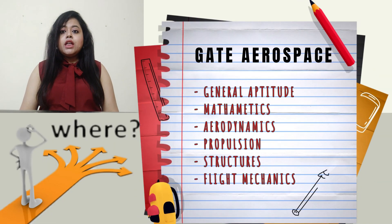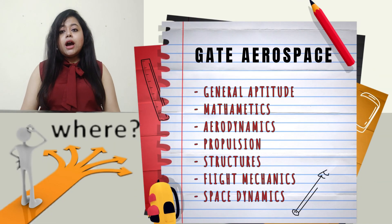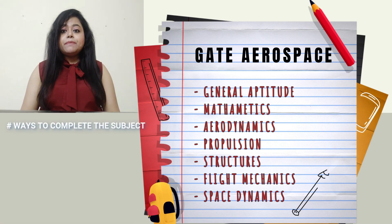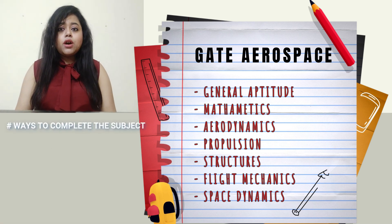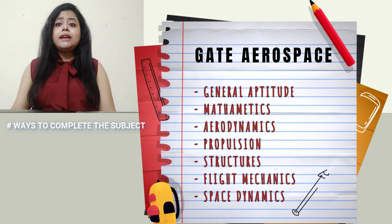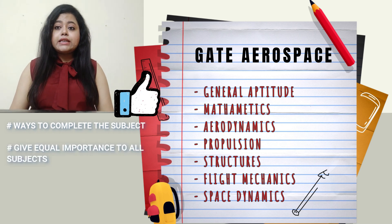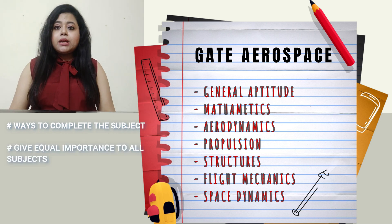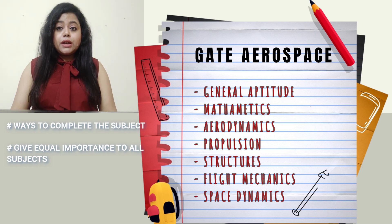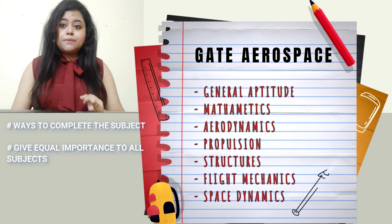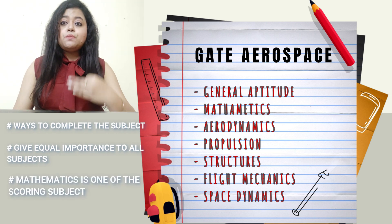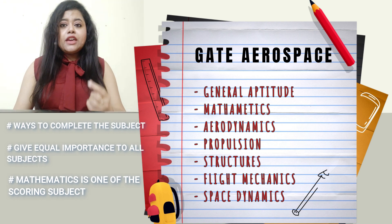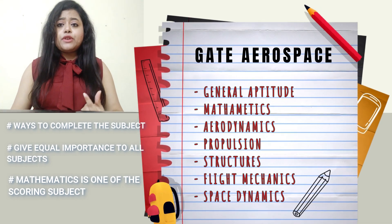It is completely up to the individual whether you want to complete subjects one by one or all at a time. Many students make the mistake of thinking General Aptitude and Mathematics are not that important — give them equal importance as the core subjects. Mathematics is one of the scoring subjects that will help boost your rank, because even a small difference can make a big difference in rank.